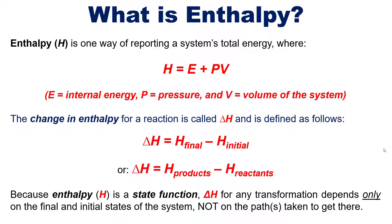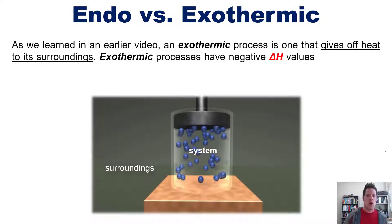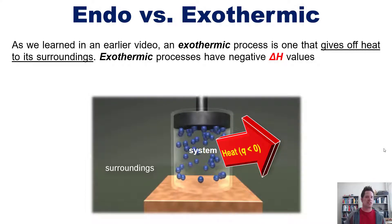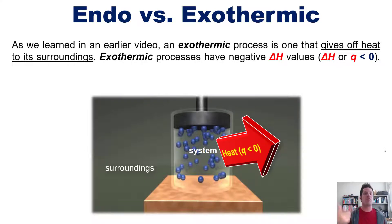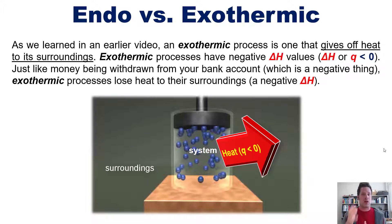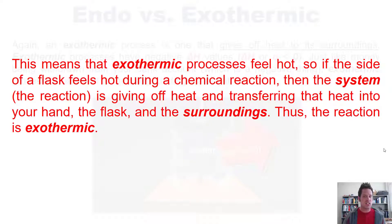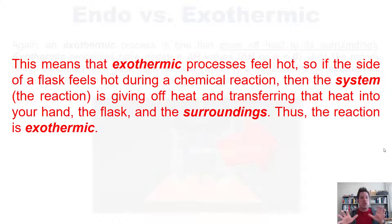As a reminder, an exothermic process is one that gives off heat to its surroundings. Exothermic processes have negative delta H values — in other words, delta H or Q, which is an abbreviation for heat (or as I like to call it, QEET), is less than zero. Just like money being withdrawn from your bank account, which is a negative thing from your account's perspective, exothermic processes lose heat to their surroundings. This means exothermic processes feel hot — if the side of a flask feels hot when you touch it during a reaction, the system is giving off heat to your hand, the flask, and the surroundings; hence the reaction is exothermic.